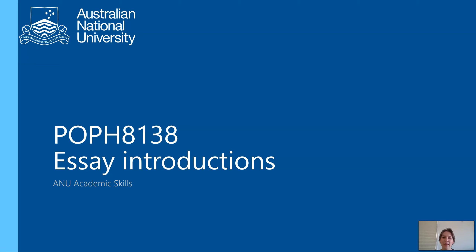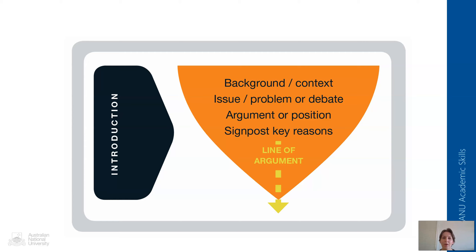Hi everyone and welcome to our third video about essay introductions. Usually essays contain four main sections or four main parts: a little bit of background or context to explain what the topic is all about, then an identification of what is the problem that this essay looks at — in your case, what is the human risk or the health risk you're looking at — and then it usually makes sense to give an overall summary of your argument, your key message for this piece of work, and to outline what the structure is going to look like and what the key points you're going to discuss are.